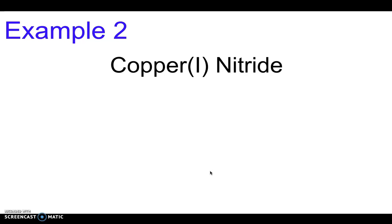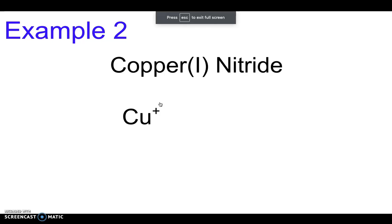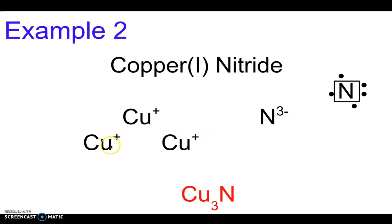Copper(I) nitride. So copper has a +1 charge. Nitride - remember that nitrogen has five valence electrons you can get that from the periodic table, so that means it's going to gain three, so it'll have a -3 charge. So we're really going to need three copper atoms to balance out the charge of that nitride atom, so the formula for copper(I) nitride will be Cu₃N.